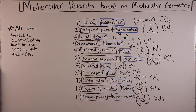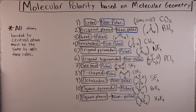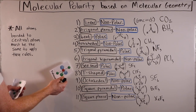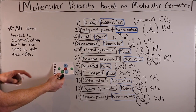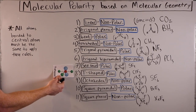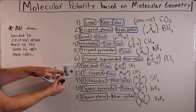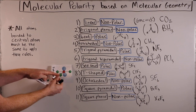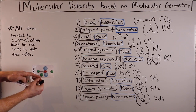T-shaped is also a polar molecule. An example is ClF₃. In this shape, two dipole moments on opposite sides cancel each other out, but a third bond at the bottom of the T pulls the molecule in that direction, so the post moves and the molecule is polar.